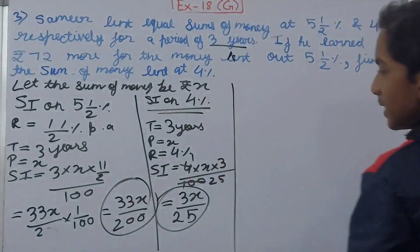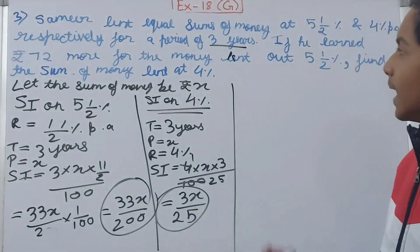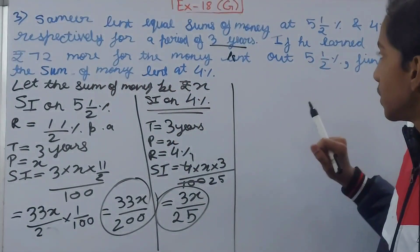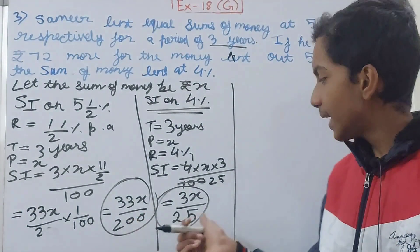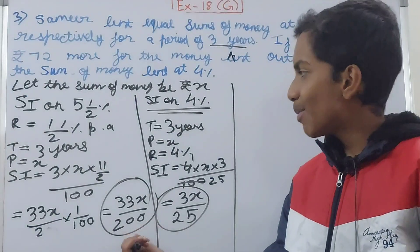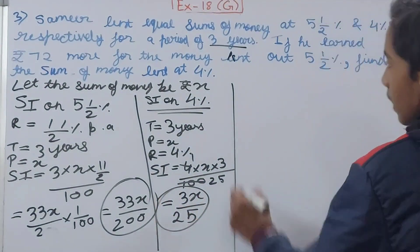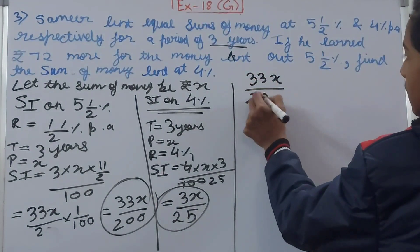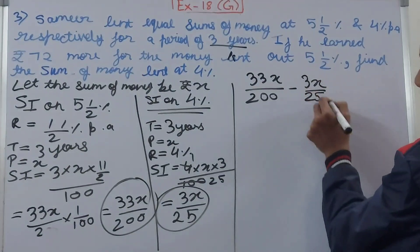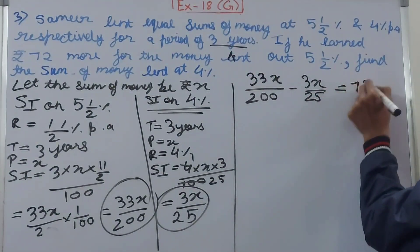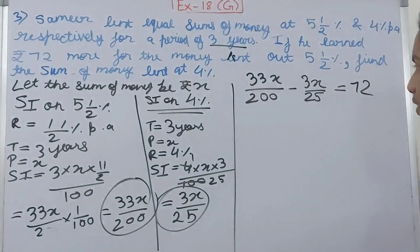We now have two interest values: 33x/200 from 5½%, and 3x/25 from 4%. Since the 5½% interest is ₹72 more than the 4% interest, we set up the equation: 33x/200 − 3x/25 = 72.